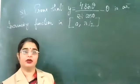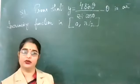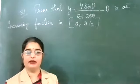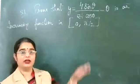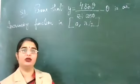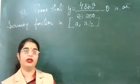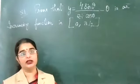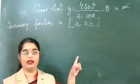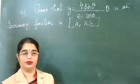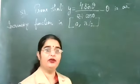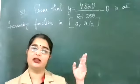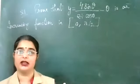Good morning class. Yesterday what we did was questions on increasing and decreasing functions. Now just see on the board — the question is: prove that y = 4sinθ / (2 + cosθ) − θ is an increasing function in the closed interval. It is not given strictly increasing or strictly decreasing — they are just asking increasing function.